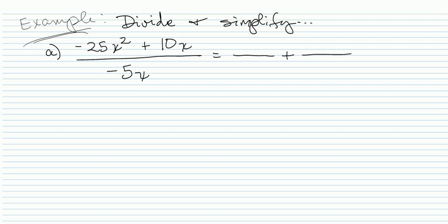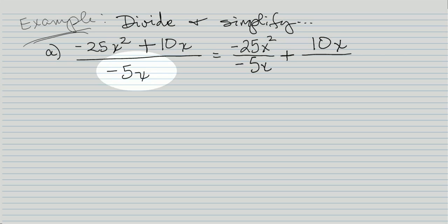So I have two terms, I have this negative 25x squared in the numerator here, and they have plus 10x, and we'll put them over their common denominator of negative 5x.